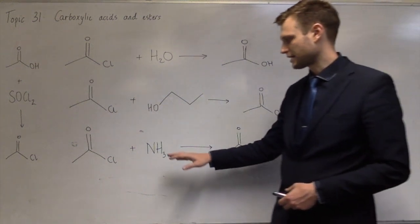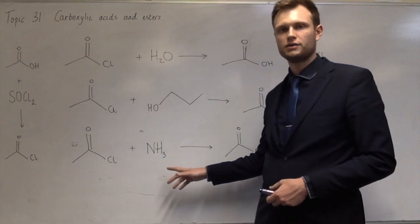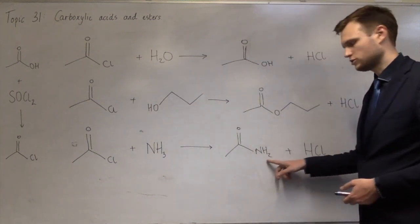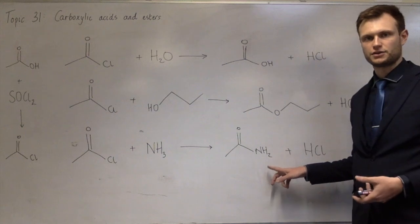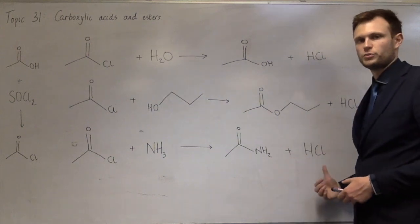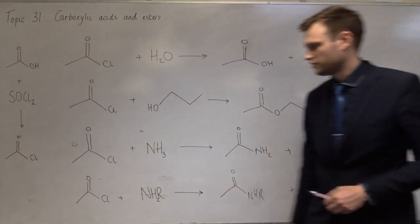And it follows on that if I reacted this with NH2R, so an amine, then you'd end up with NHR here, which would be a secondary amide. The other product would still be HCl. So I've just put one of those on the bottom.